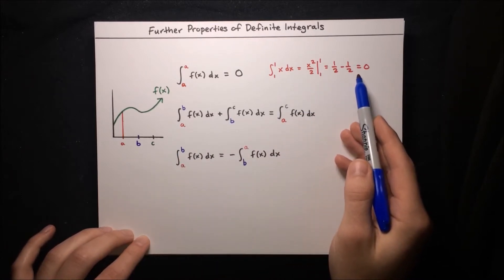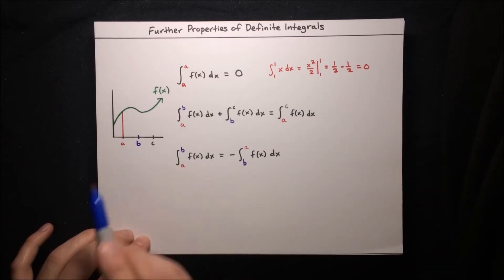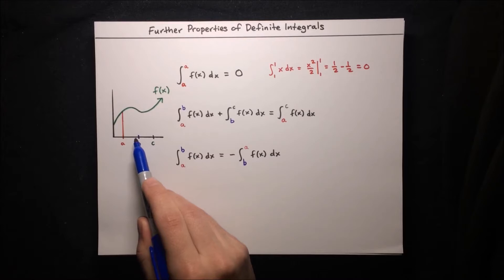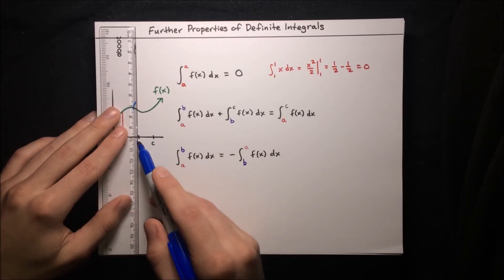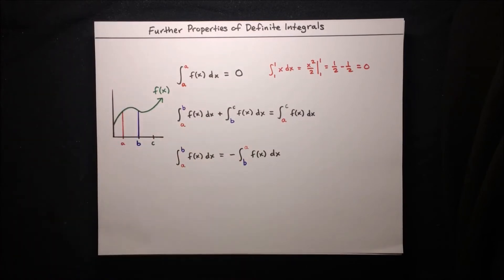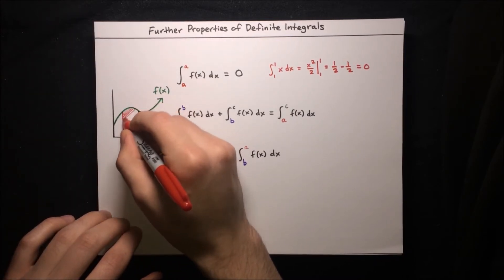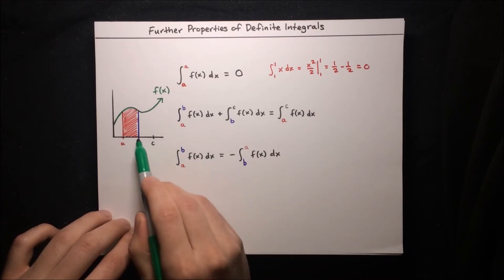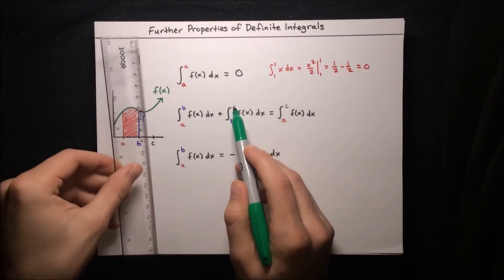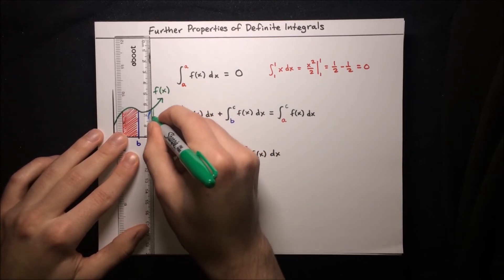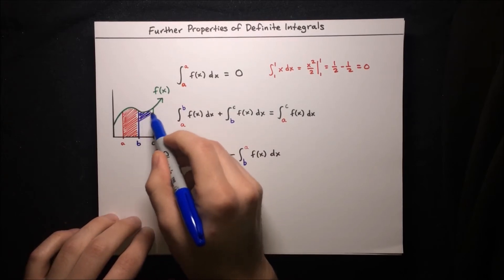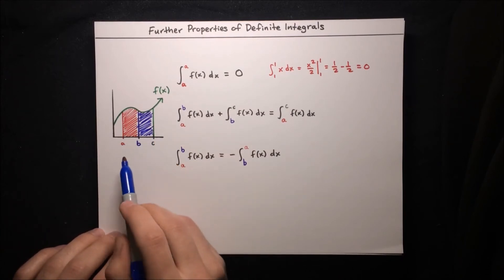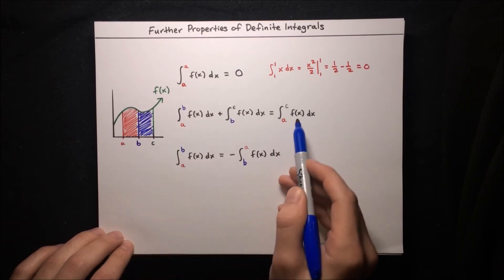Here we're going to focus on the area intuition. The integral of f(x) from a to b represents the area under f(x) on the interval from a to b. The integral picks up at b and then goes to c, representing the area from b to c. When we add these areas together, we get the full area from a to c, and that's exactly what the third integral represents.